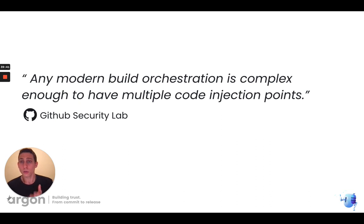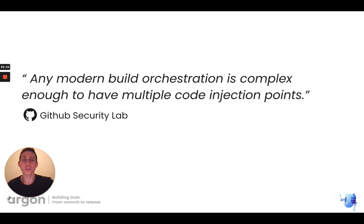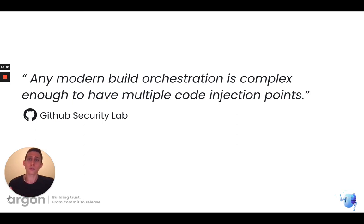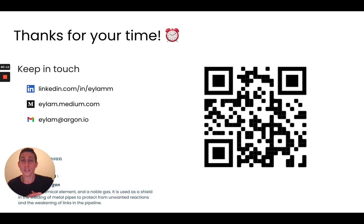I'll end with an interesting quote from GitHub Security Lab: 'Any modern build orchestration is complex enough to have multiple code injection points.' I think this reflects well the fact that technology has changed — build orchestration is now so complex that even GitHub themselves acknowledge that multiple code injection points can definitely be found there. That's it for today. I really appreciate your time. If you have any questions or thoughts, please feel free to keep in touch. Thank you.